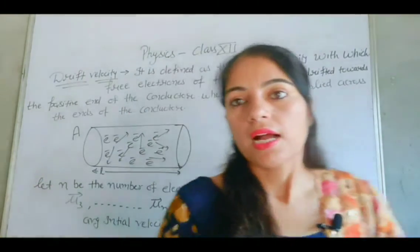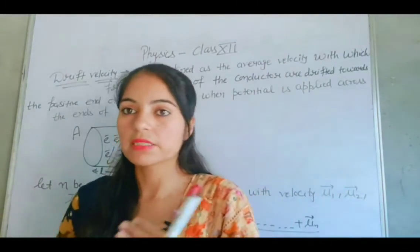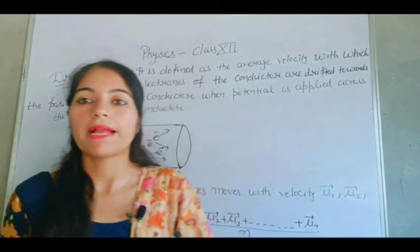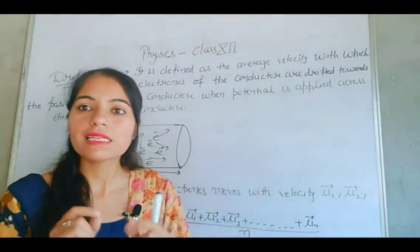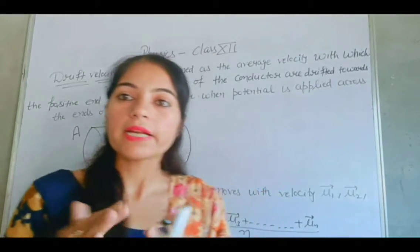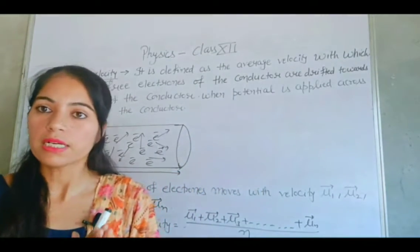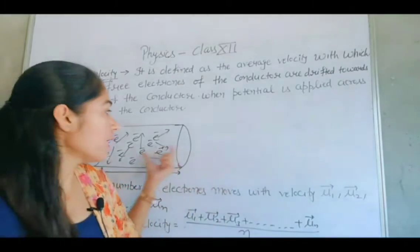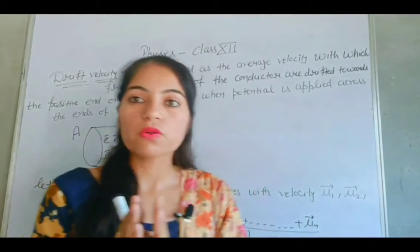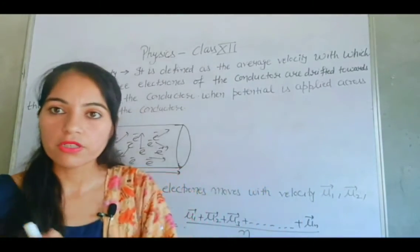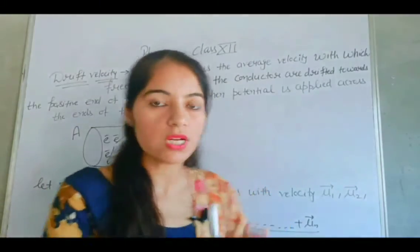But if we apply some potential difference — apply some battery, or we can say apply some potential to this conductor — then these electrons will direct themselves toward the positive end of the conductor. Because electrons carry negative charge and are attracted toward the positive charge.